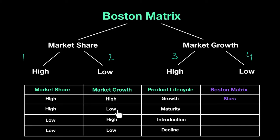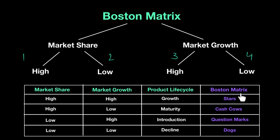If a product has high market share and low market growth, it is called a cash cow — it's in its maturity phase. Low market share and high market growth gives you a product called a question mark, where you're still in the introduction phase and unsure whether it will take off or come down crashing. And a product with low market share and low growth potential is called a dog — like a declining product.